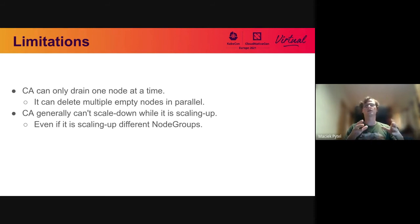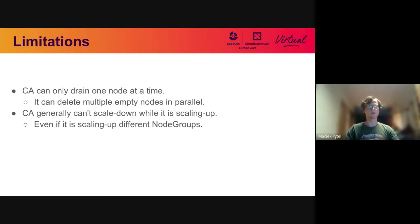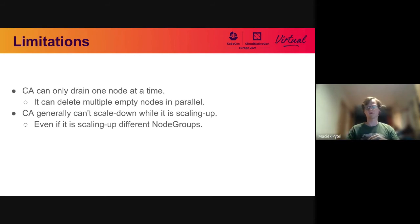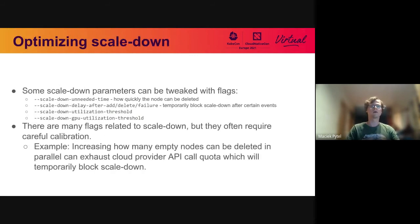Deleting empty nodes is many times faster — more than 10 times faster in most configurations — than deleting nodes that run pods. In very large clusters it can be very important to optimize scale-down by ensuring pods terminate in a way that leaves a lot of empty nodes for fast scale-down. This becomes very important at thousands of nodes. Another limitation is that Cluster Autoscaler cannot scale up and scale down at the same time. It can scale up multiple node groups or the same group multiple times, but if one node group is scaling up, this blocks scale-down of any other nodes in the cluster.